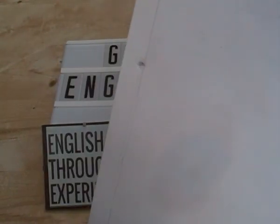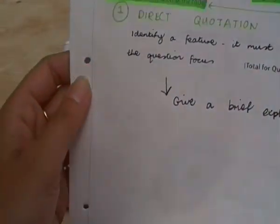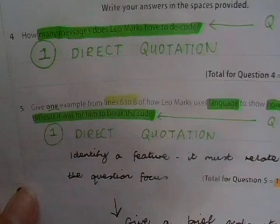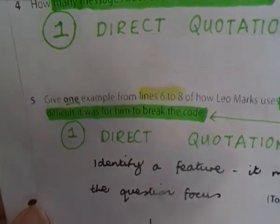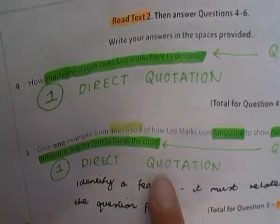We're looking now at Question 5. So you'll have read your second text by the time you get here, and in Question 5 you're asked to give one example from a chunk of text.